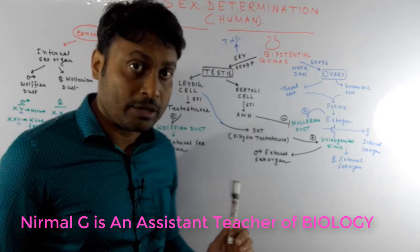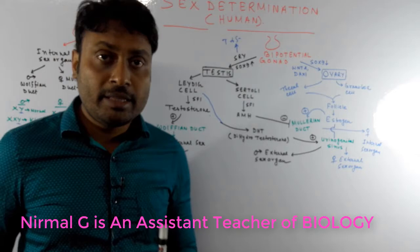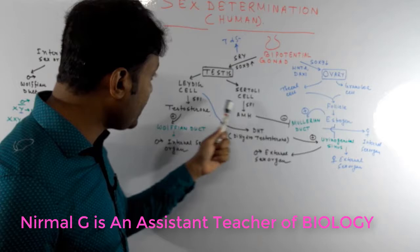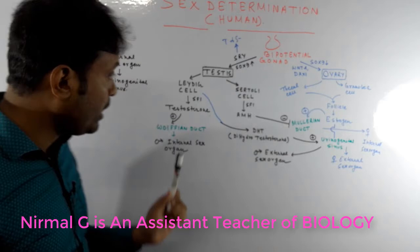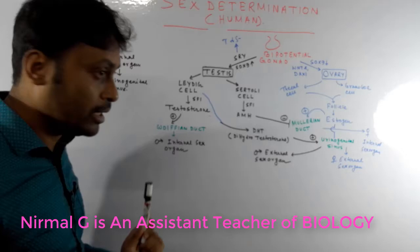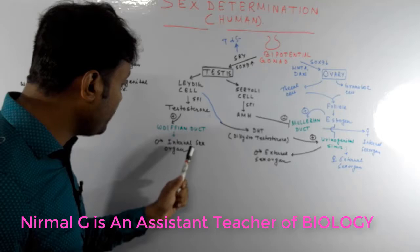Just after the formation of the testes, two cell types are present: Leydig cells and Sertoli cells. The SOX9 gene produces a protein factor called steroidogenic factor 1 (SF1), which acts upon the Leydig cells and Sertoli cells. When SF1 acts on the Leydig cells, these cells synthesize two male sex hormones: testosterone and dihydrotestosterone (DHT).